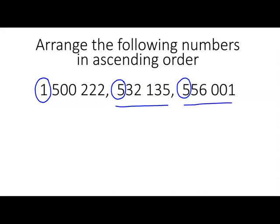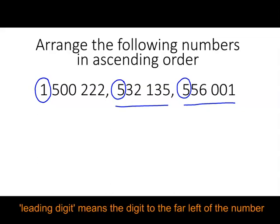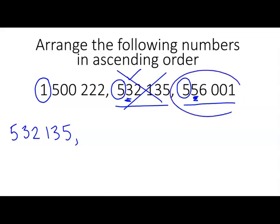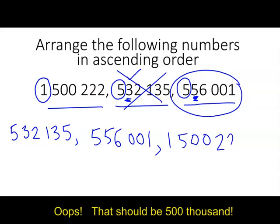So between the second and the third number, let's firstly try to work out which is the smallest. Because our leading digits are both 5, this doesn't help us distinguish which number is smaller. So let's look at the 10,000s column. Here we have a 3 and a 5. The 3 is smaller, so 532,135 is our smallest number. That means 556,001 is the next smallest number, followed by 1,500,222.